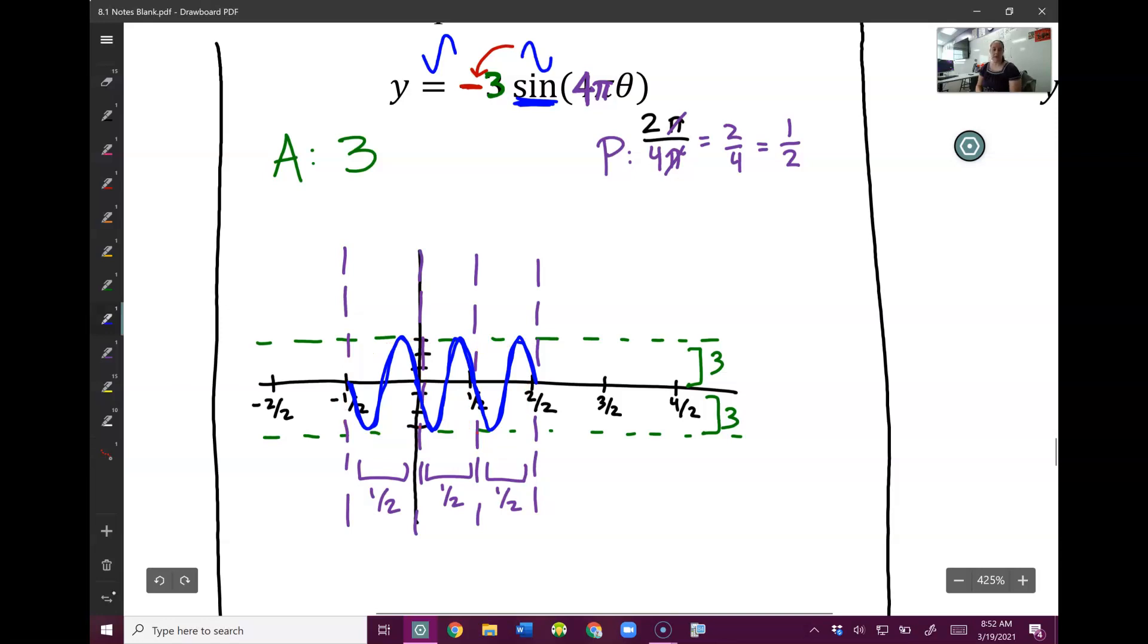I just need 3 of these boxes. So I've got my 3 boxes here. And then I need to fit my sine shape into it. With that negative, it's going to go middle, bottom, top, middle. So middle, bottom, top, middle. Middle, bottom, top, middle. And there's our curve.